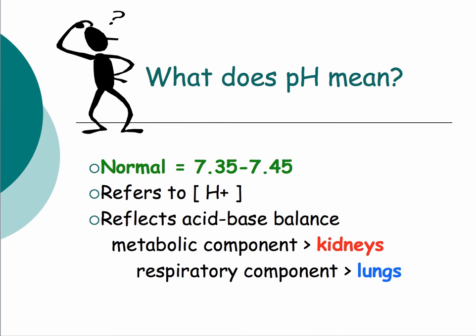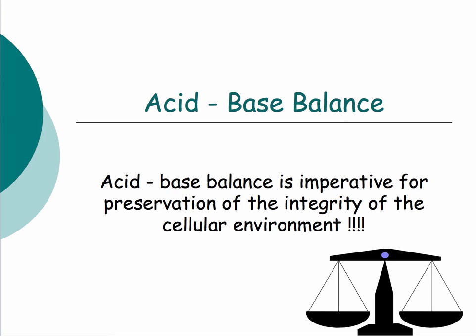Now we're getting into the meat of arterial blood gases. pH is a logarithmic — specifically a negative logarithmic — scale looking at the concentration of hydrogen ions. As the concentration of hydrogen ions goes up, the pH goes down logarithmically. It reflects the acid-base balance of the body. The metabolic component of arterial blood gases is mostly dictated by the kidneys, and the respiratory component by the lungs. Acid-base homeostasis is extremely important for preservation of cellular environment integrity.